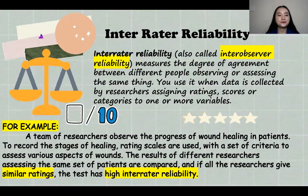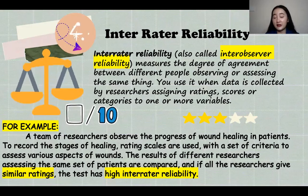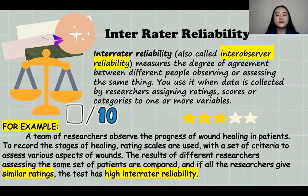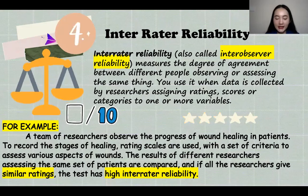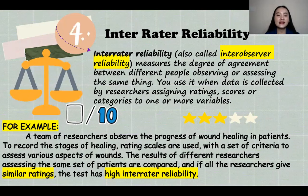So for example, a team of researchers observed the progress of wound healing in patients. So to record the stages of healing of the patients, they're going to use their rating scales with a set of criteria to assess various aspects of wounds. The results of different researchers assessing the same set of patients are compared. So the results are compared. And if the researchers or if all the researchers give similar ratings, then in that case, the test has high inter-rater reliability.